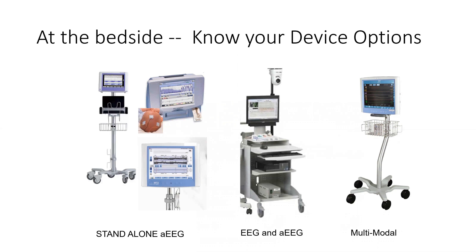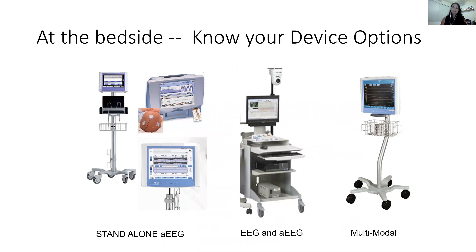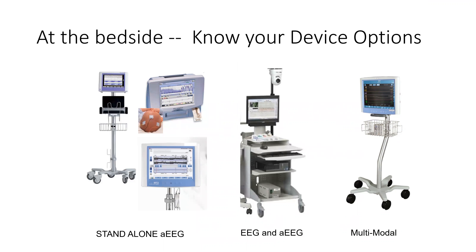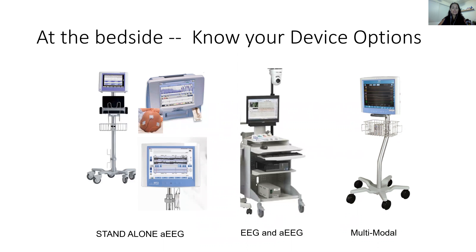Who makes this? That's the Moberg CNS — Component Neuromonitoring System. It incorporates and integrates all the devices connected to the baby: cooling blanket, NIRS, physiologic monitoring, EEG, aEEG, and ventilator settings. It has a list of components they've interfaced with. It's used a lot in adult ICUs where there are many more devices — pupilometers and all sorts of things. How much does it cost? Those are all contract things.